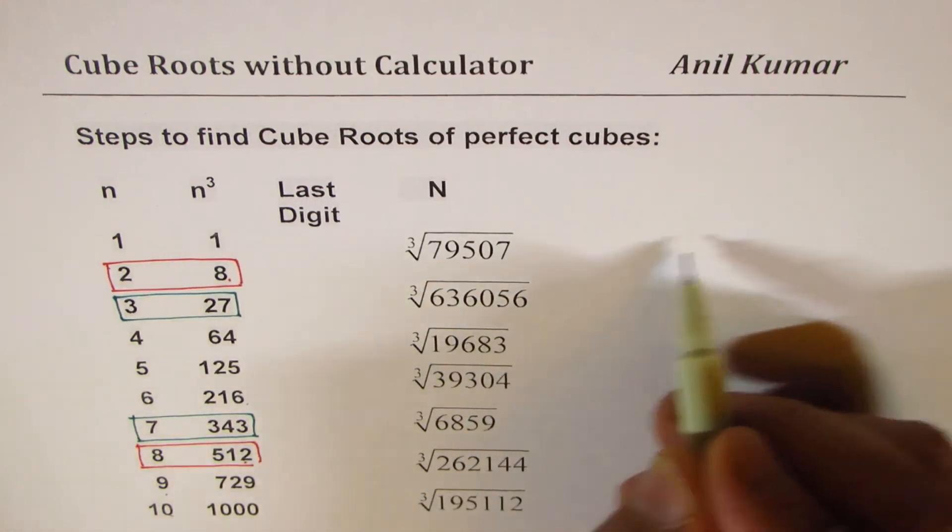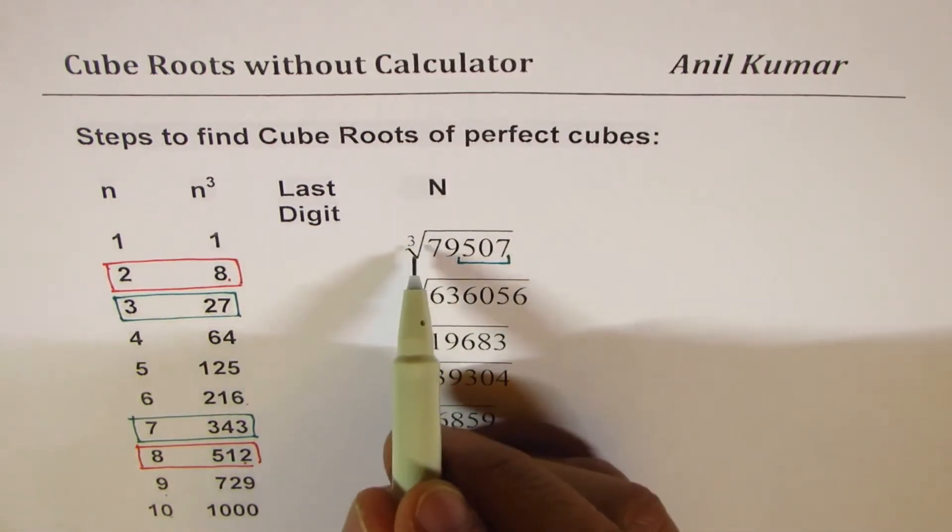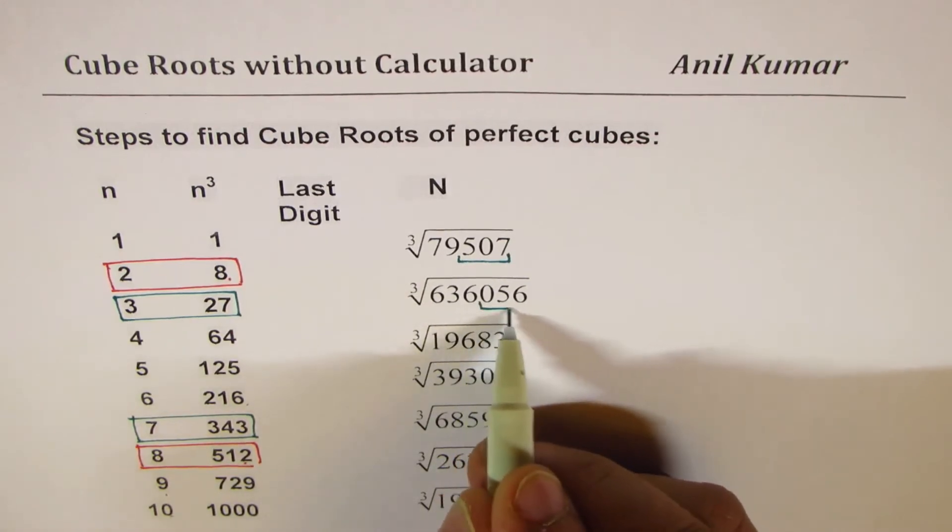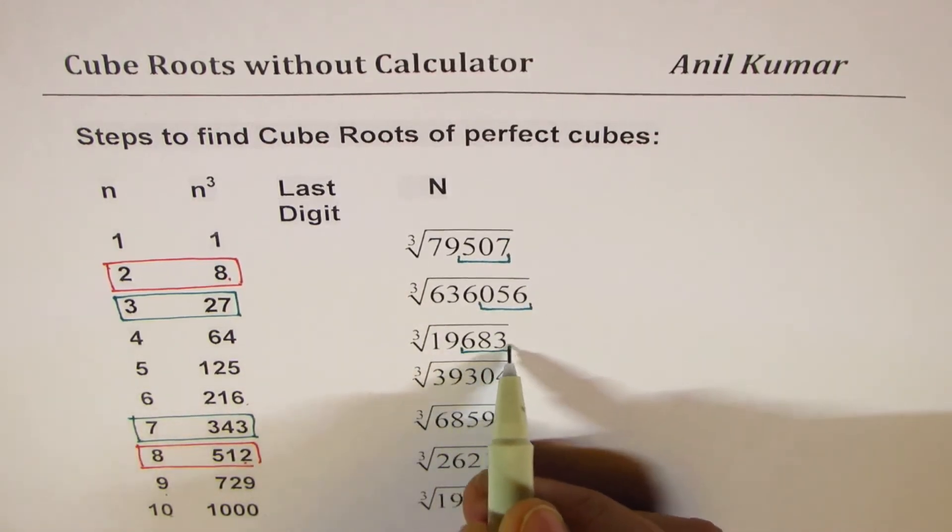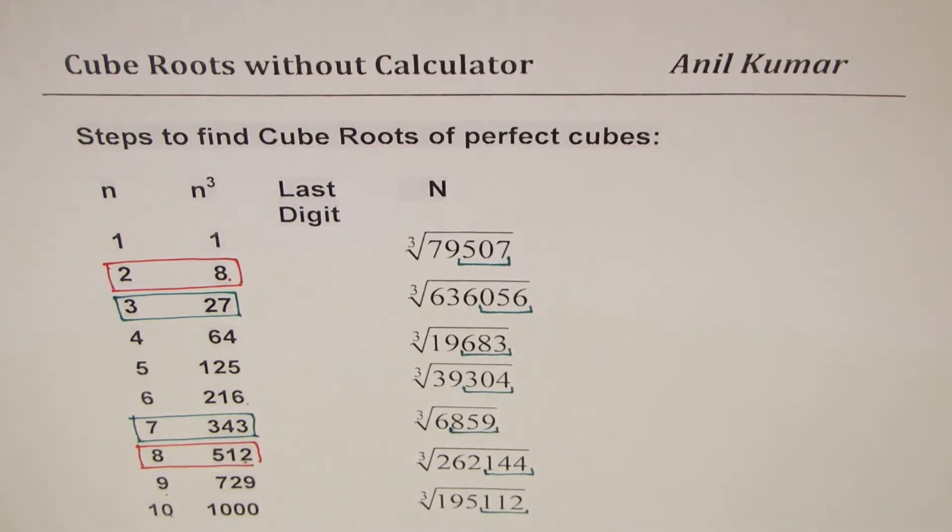So the first group will be for three digits, since we are doing cube root. This will be our first group. So I'm just dividing all and I'm taking first three from the right side as one group.